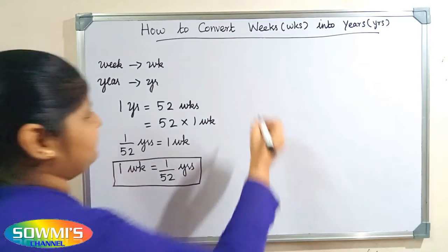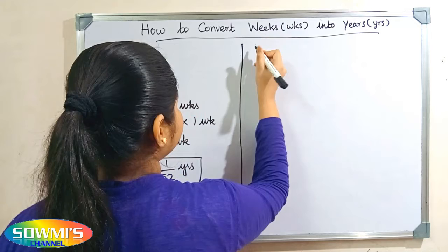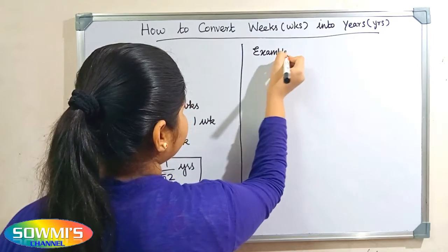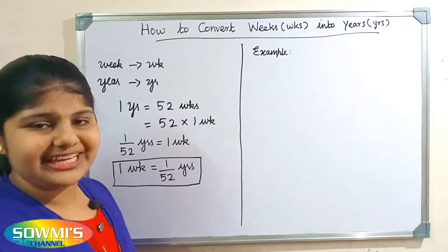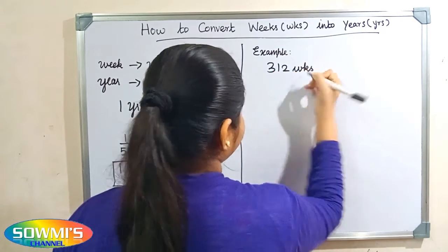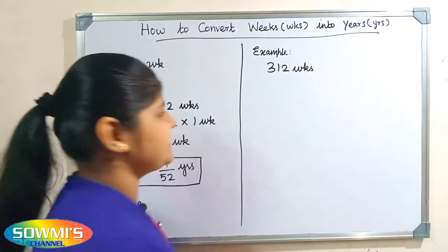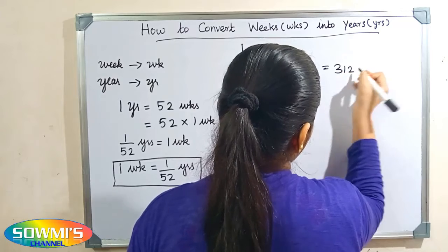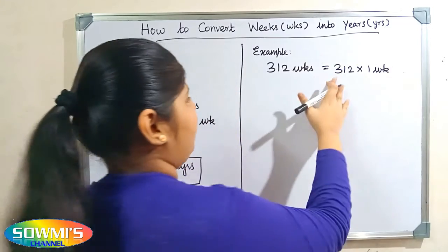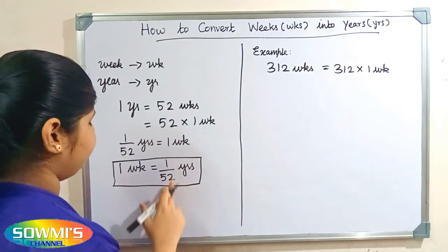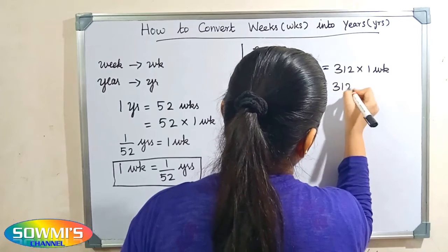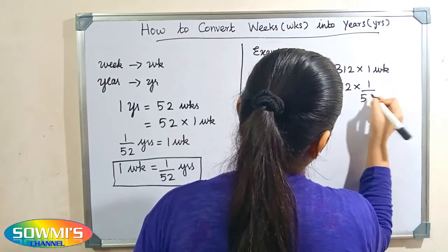Now we will take some examples. For example, we can take 312 weeks. So 312 weeks can be written as 312 multiply 1 week. Now we have to apply the formula — we substitute 1 by 52 years in the place of 1 week.